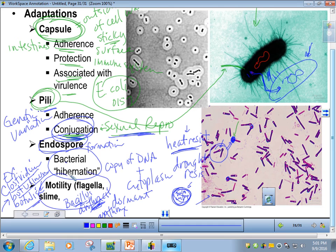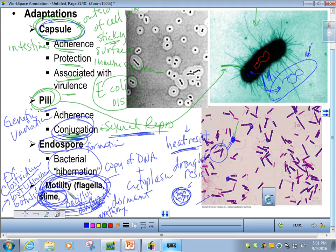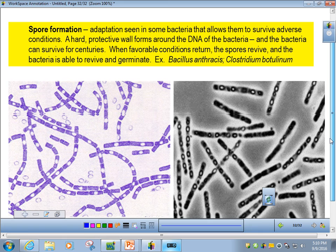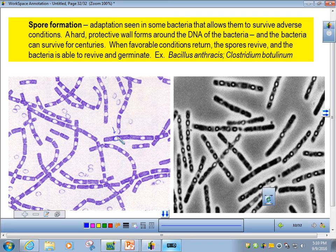Here are some pictures showing endospore formation — you can see where the DNA and a little bit of cytoplasm are protected inside the endospore. You can see the white areas in the images — those are all endospore formations.